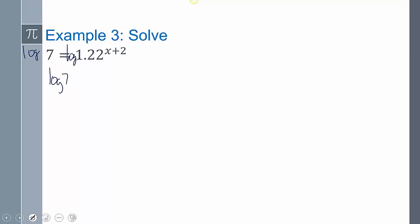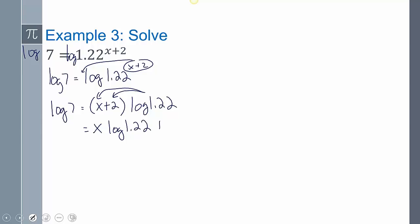I'm going to get log 7 equals log 1.22 to the (x+2) exponent. So now I can take that and move it to the front. So I get log 7 equals (x+2) times log 1.22. Now I have to distribute. Distributing this log 1.22 with both of these, I'm going to get x log 1.22 plus 2 log 1.22, and that still equals log 7.